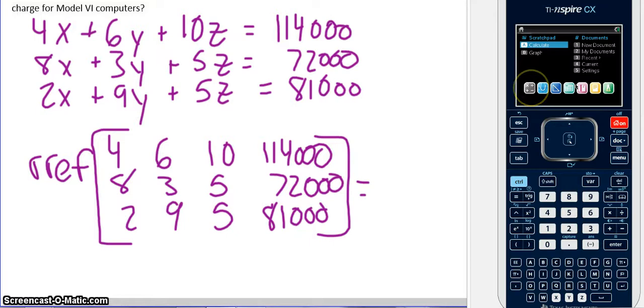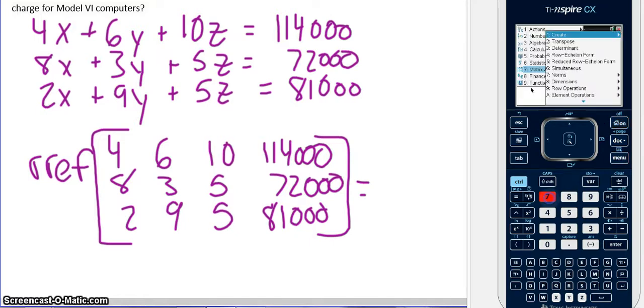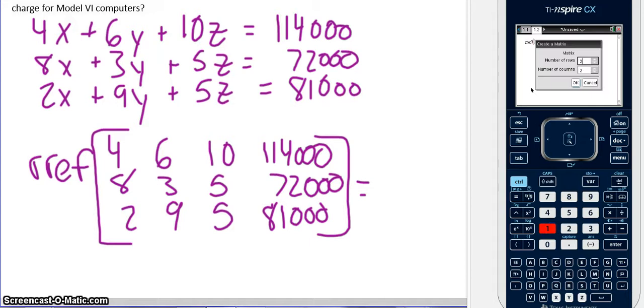I'm going to pull up my calculator, menu, matrices. We're going to pick RREF, which is number five first, and then we're going to create a matrix. This is 3 by 4, so three rows and four columns. Remember, tab brings you to the next box. And then this will give us our answer.